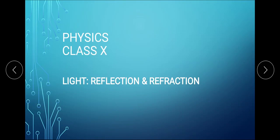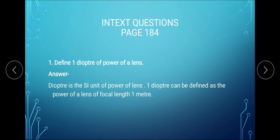Hello students. We will continue with chapter Light, and today we will discuss the BPUs given on page number 184 and then we will do the chapter end exercise. Please read the question given on page 184. Question 1 says: define one diopter of power of a lens.